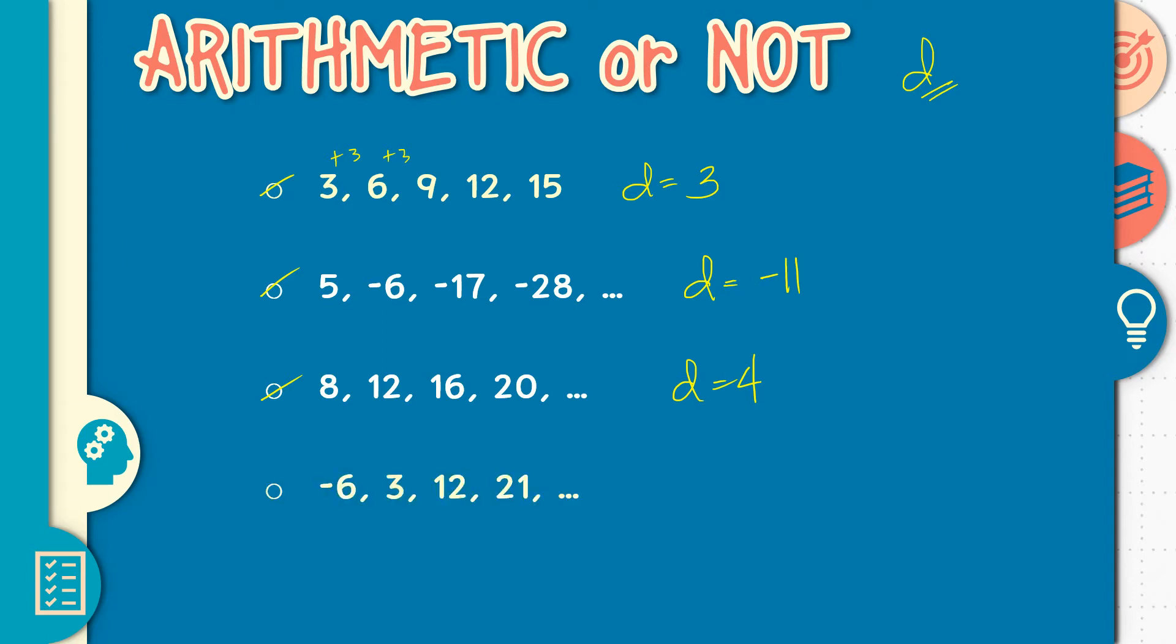Next: Negative 6, 3, 12, 21. Okay. This is an arithmetic sequence and our common difference is positive 9.